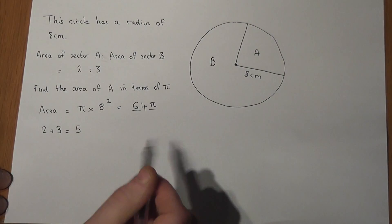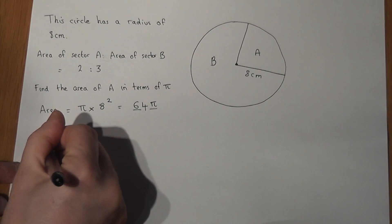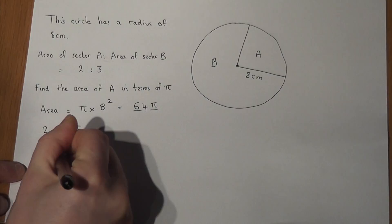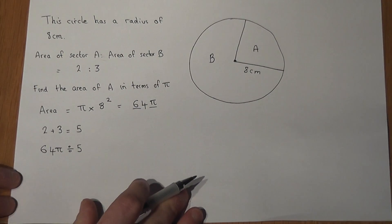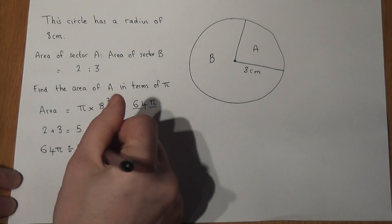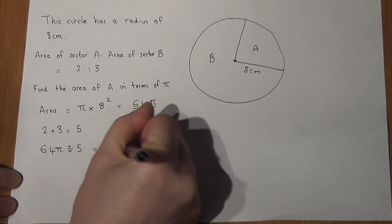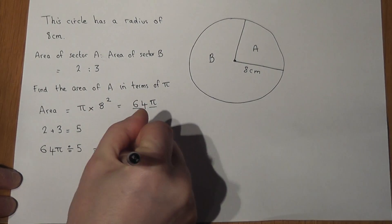So one part will equal 64π divided by 5, which I could write as a fraction if I wished.